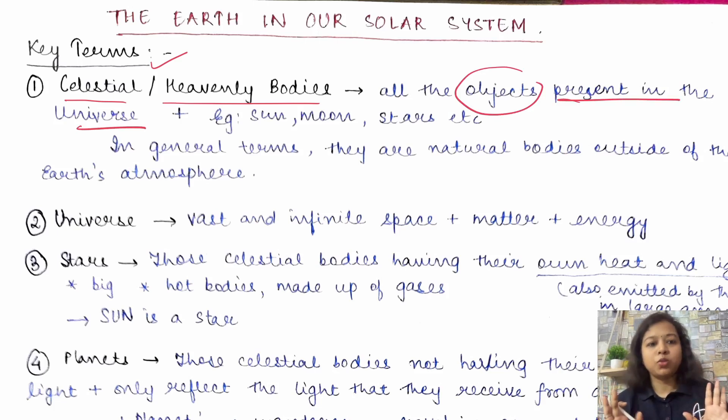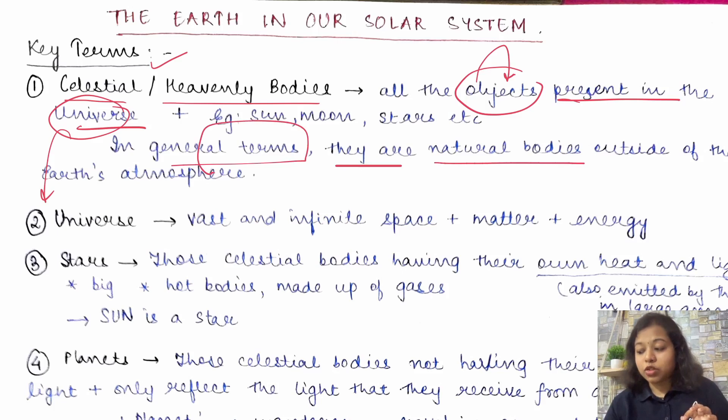So all the objects which are present in the universe would be considered as the celestial or the heavenly body. Universe mein maujood. Now, what is the universe? We will talk about that later. So every word that I have written, I would be introducing you to that concept. I will not leave those things. So all the objects, all the things that are present in the universe, we call celestial or the heavenly bodies. Now, the point is, what are those examples? For example, you have sun, you have moon, you have stars, you have planets and all of those things.